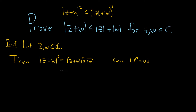The next thing we're going to use is the fact that whenever you have a sum like this and you're taking the conjugate, you can just take the conjugate of each term. So this would be z plus w times the conjugate of z plus the conjugate of w. That's from this property here.